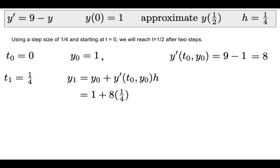Plugging in y₀ = 1: the differential equation gives a slope of 9 - 1 = 8, and our step size is 1/4. So 8 × 1/4 = 2, and y₁ = 1 + 2 = 3.